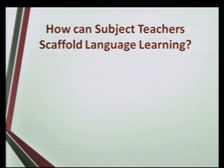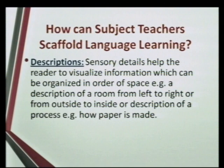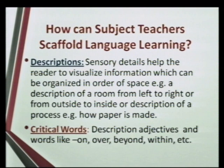Another type of text structure is description, where you describe certain things in detail. For example, describing your classroom: there is a table in the left corner of the classroom, there is a pen on the table, there are 50 chairs in the classroom — you keep graphically describing it. Critical words used here would be descriptive adjectives and spatial words like 'on,' 'over,' 'beyond,' and 'within.' We have just given you some examples of how a teacher can scaffold language learning across subject areas.